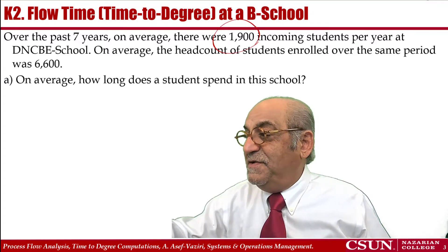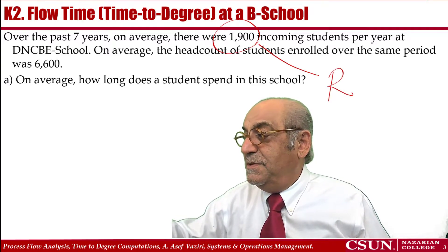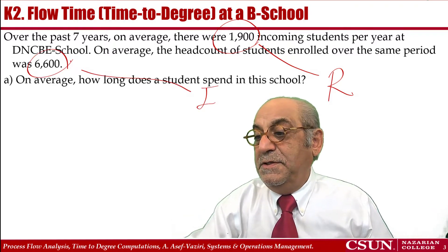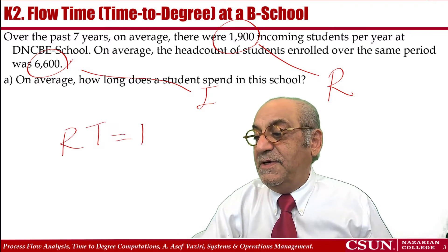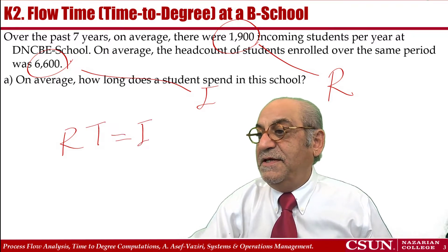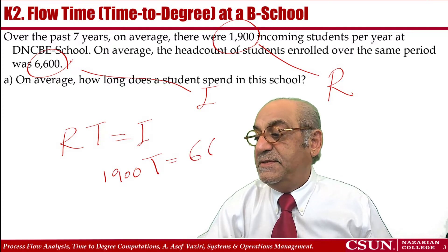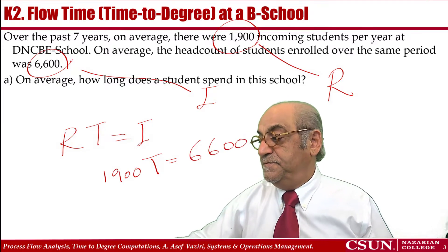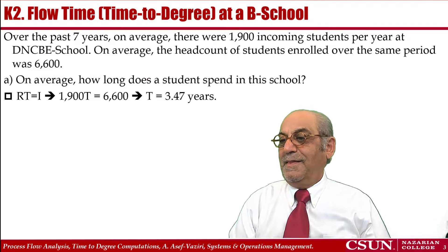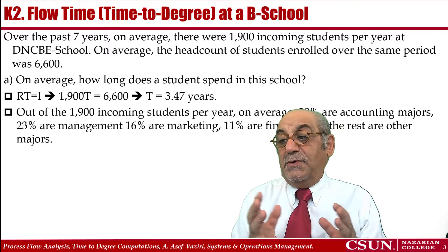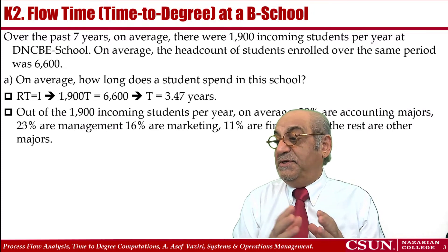I have the throughput and I have the inventory. Throughput times flow time is equal to inventory, and therefore 1,900 times flow time is equal to 6,600, giving us 3.47 years.